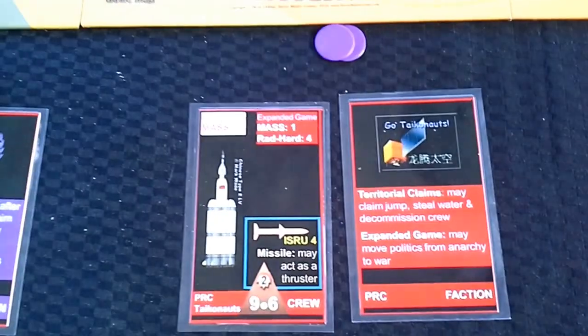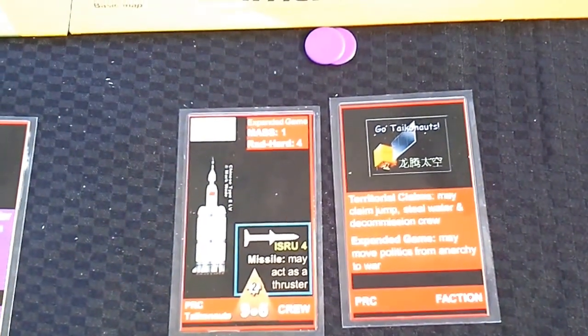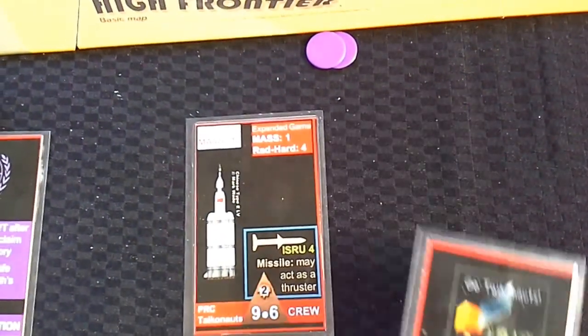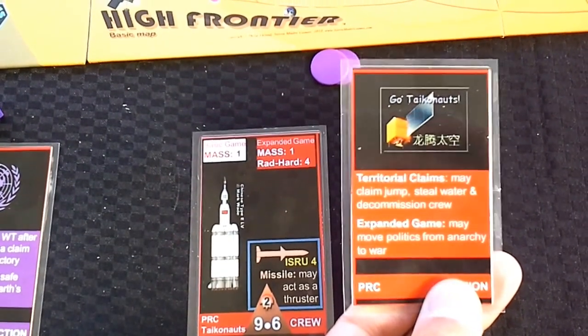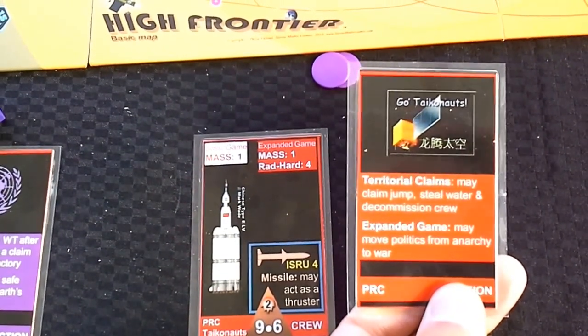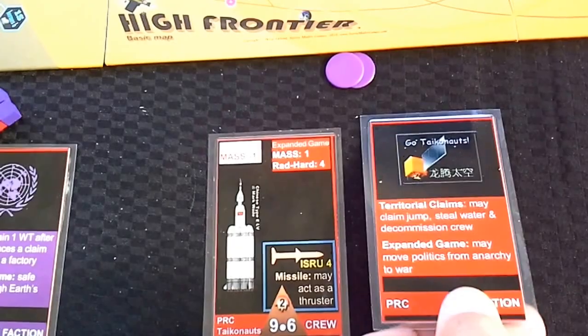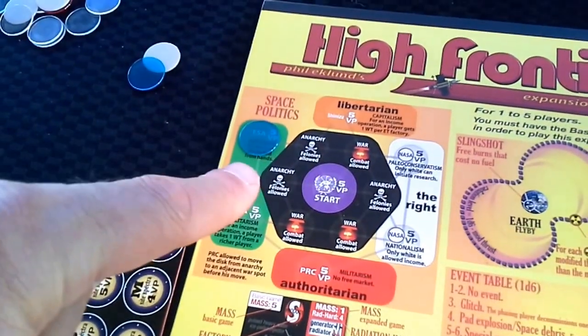Adam was playing the People's Republic of China and their ability was to they may claim jump, steal water and decommission crew and may also move the politics marker from anarchy to war, if required.